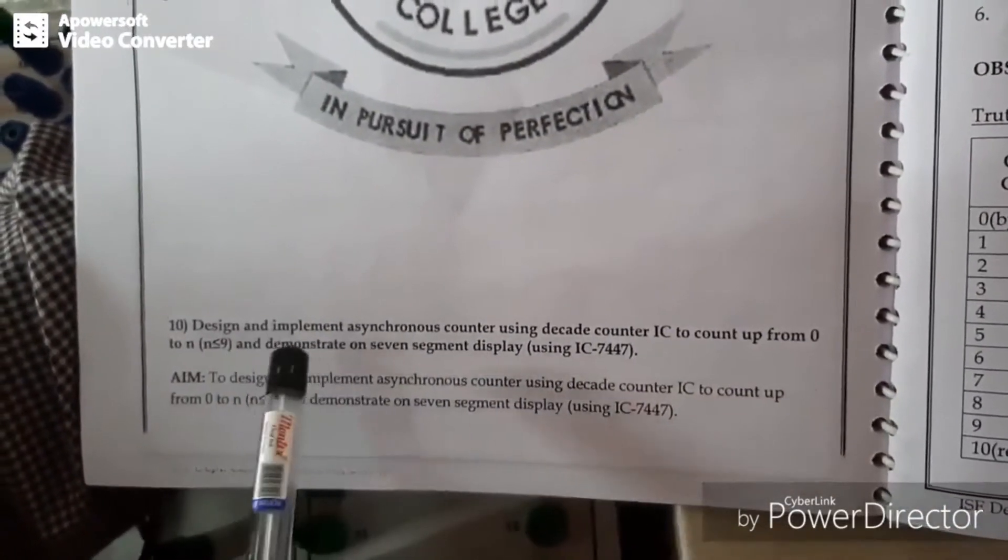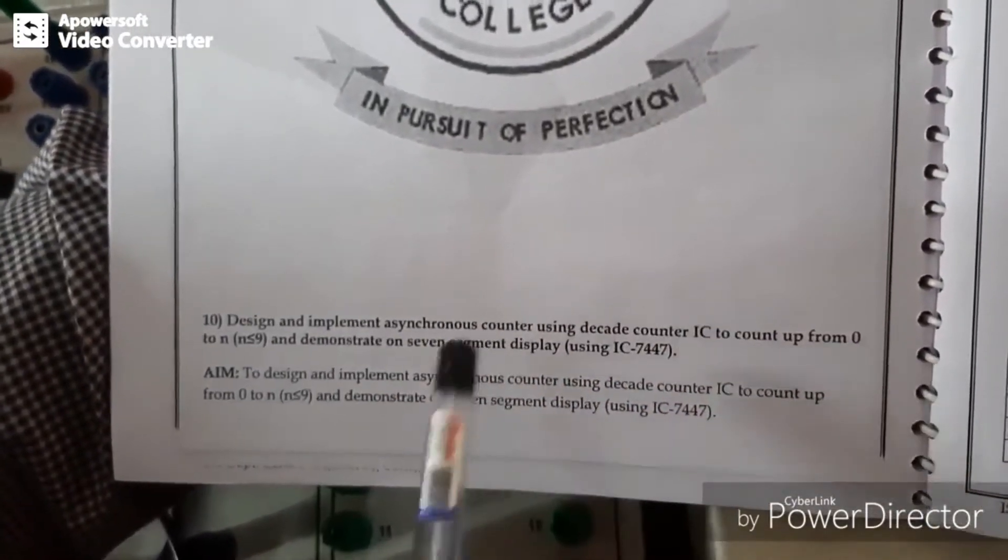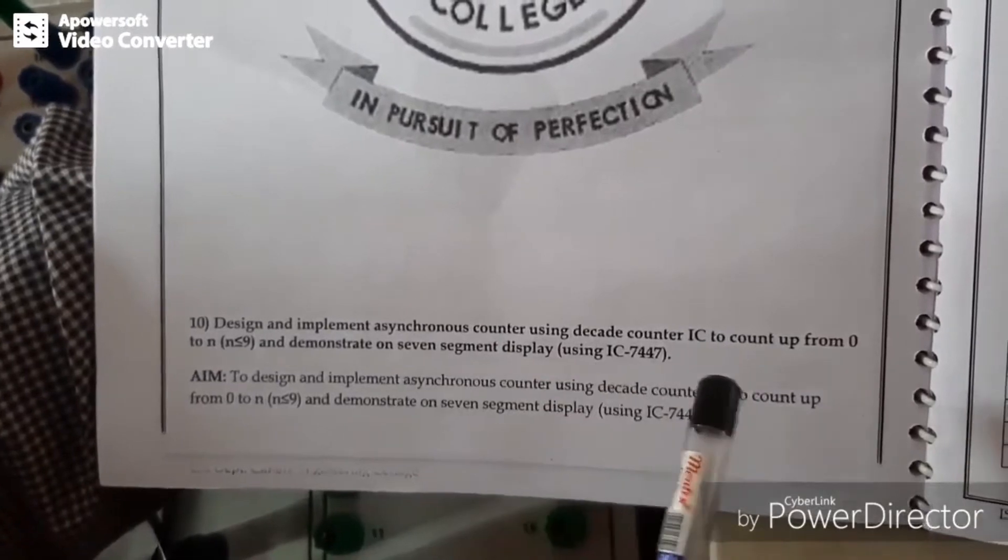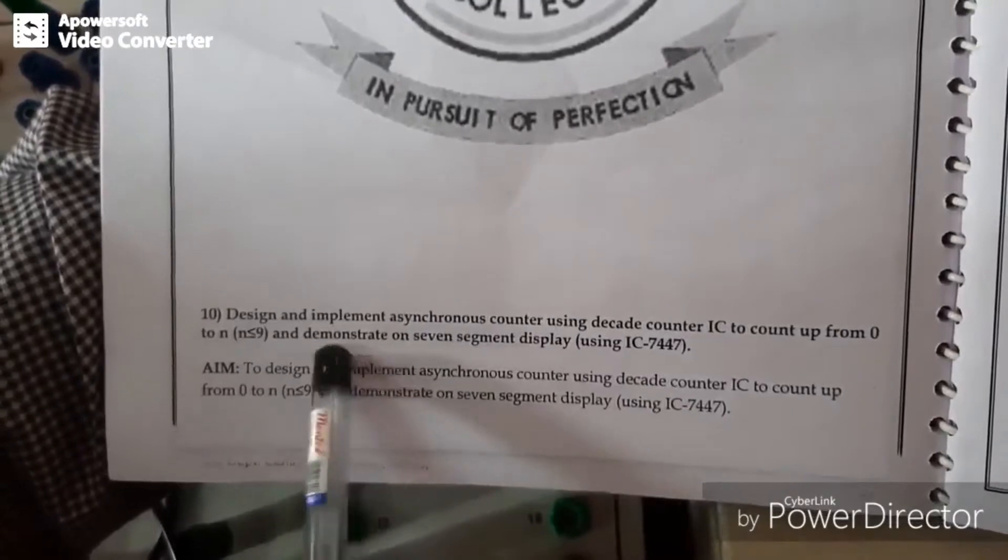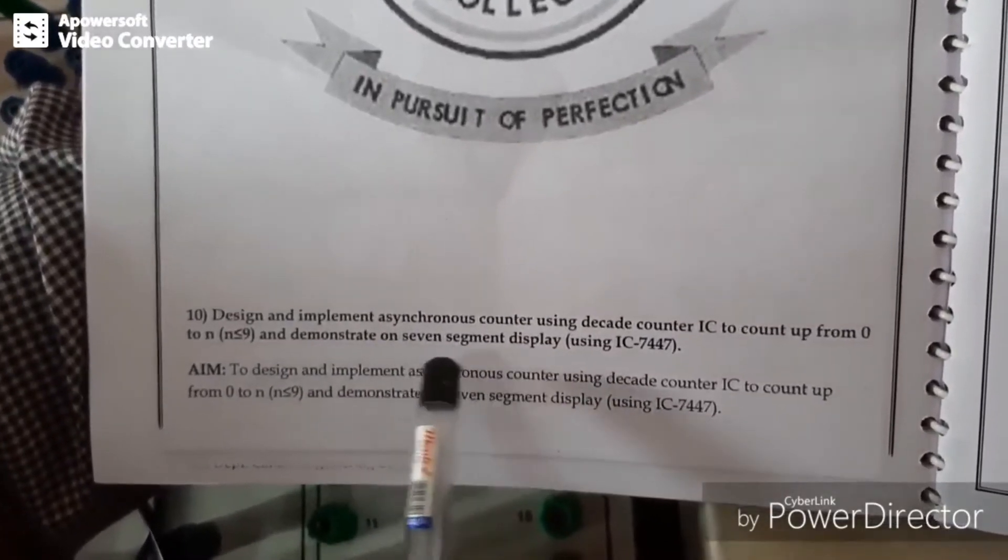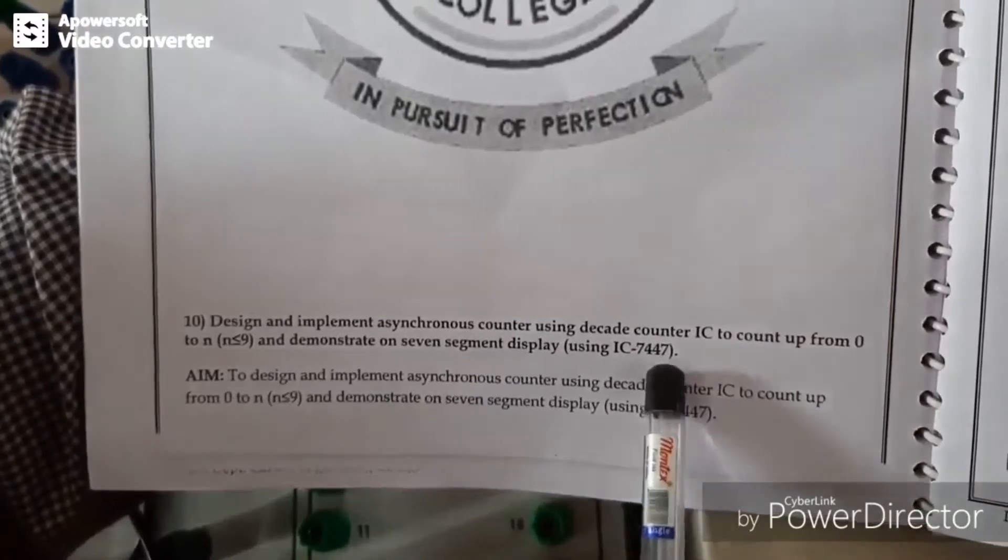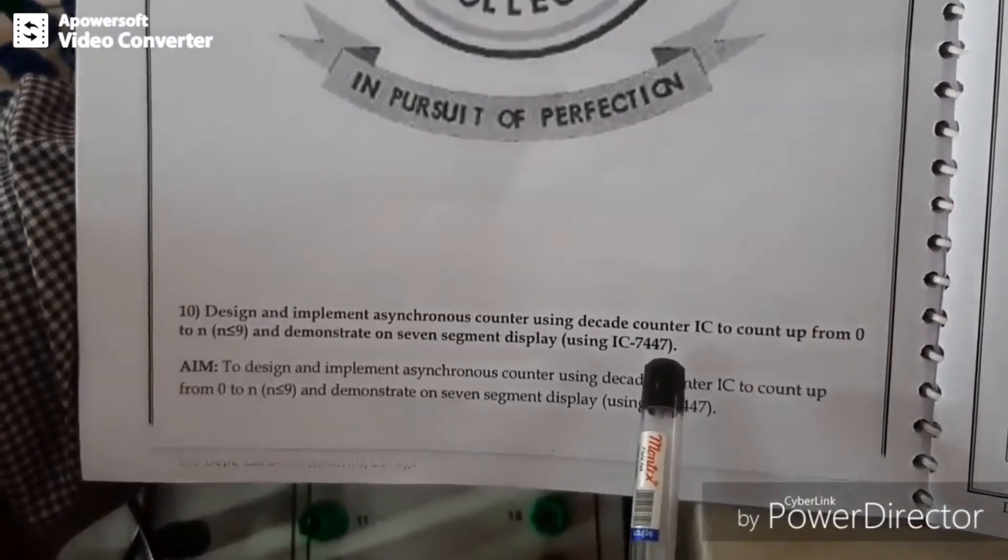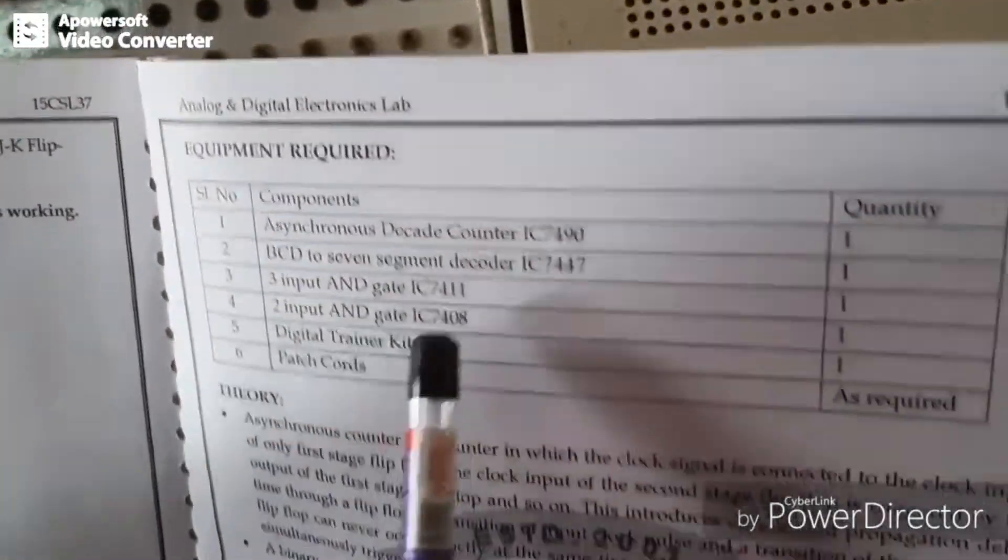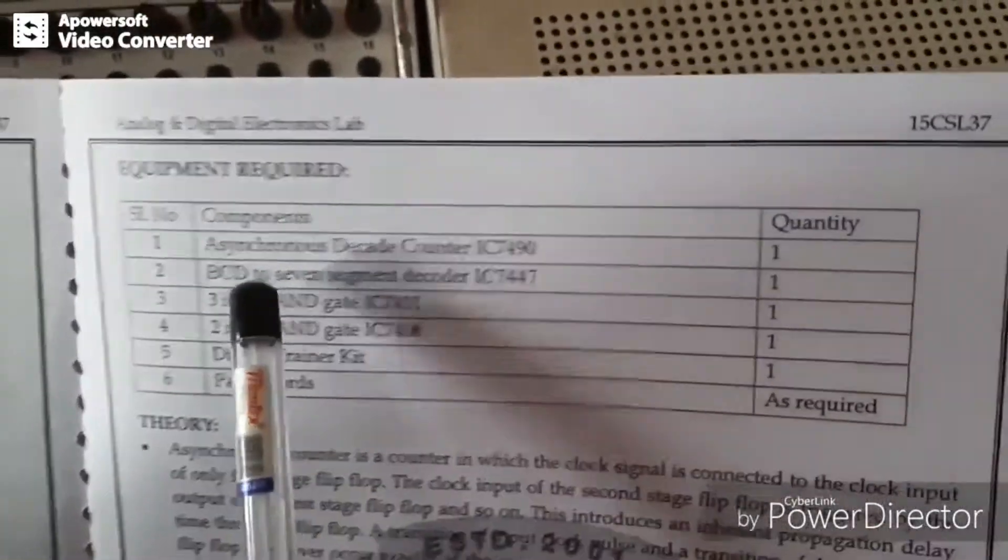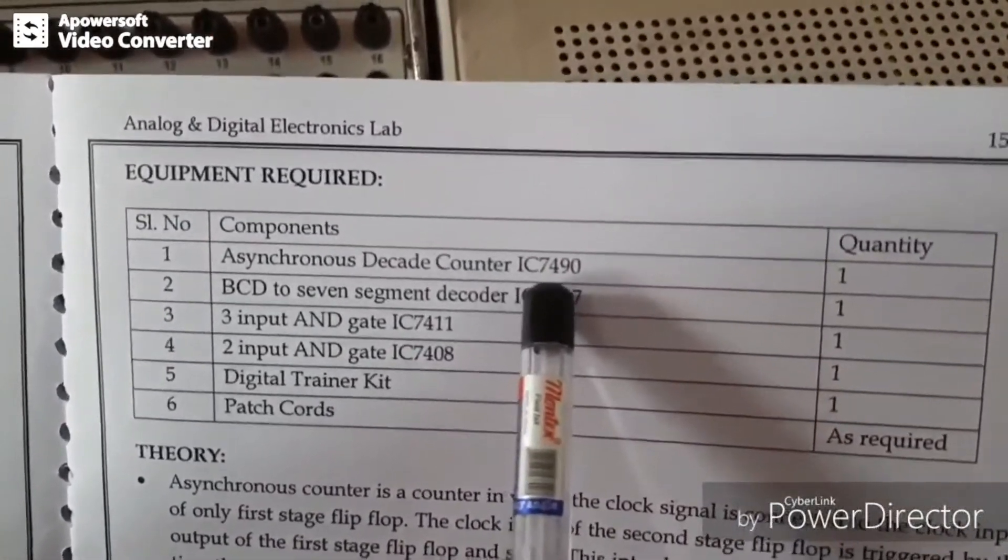So here we are going to design a decade counter and we will display the counting process by using one more IC, that is 7447. 7447 is a decoder driver for 7-segment components. Components required here: one is asynchronous decade counter 7490.